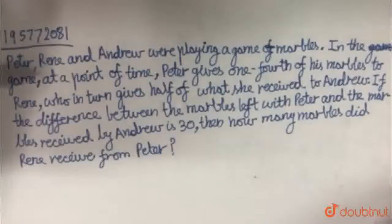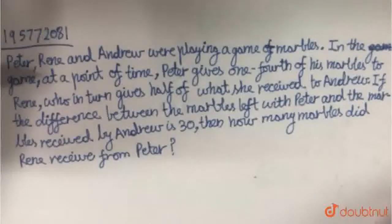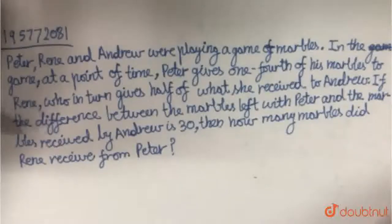Peter, Ren and Andrew are playing a game of marbles. In the game, at a point of time, Peter gives one-fourth of his marbles to Ren, who in turn gives half of what she received to Andrew. If the difference between the marbles left with Peter and the marbles received by Andrew is 30, how many marbles did Ren receive from Peter?